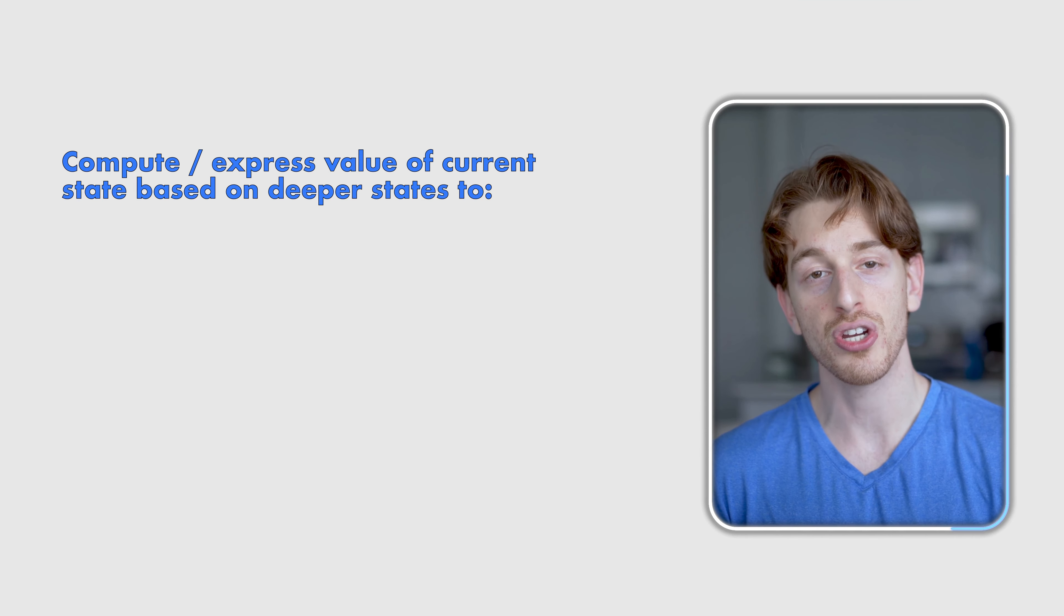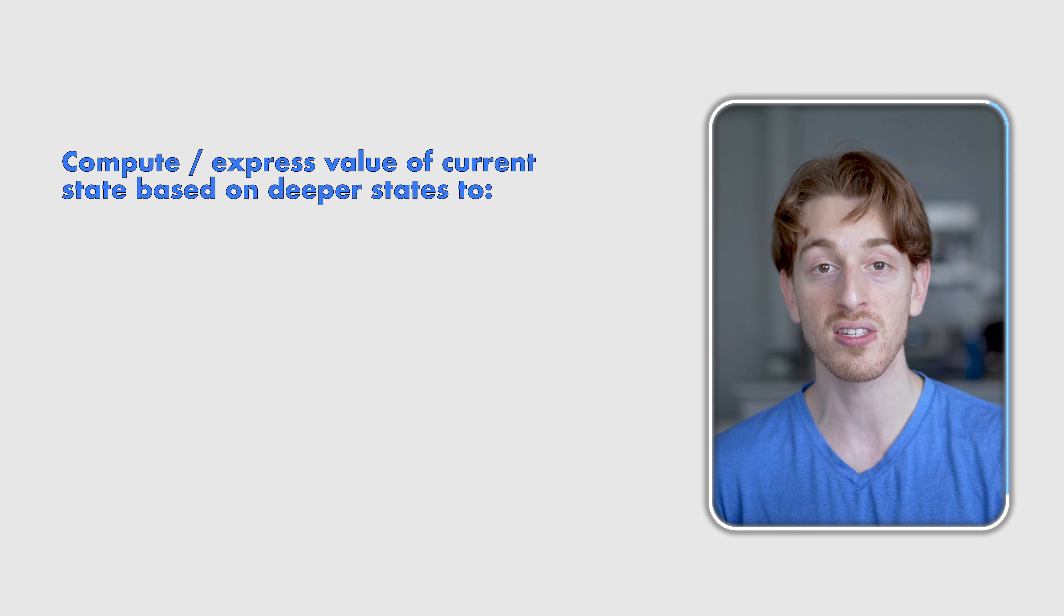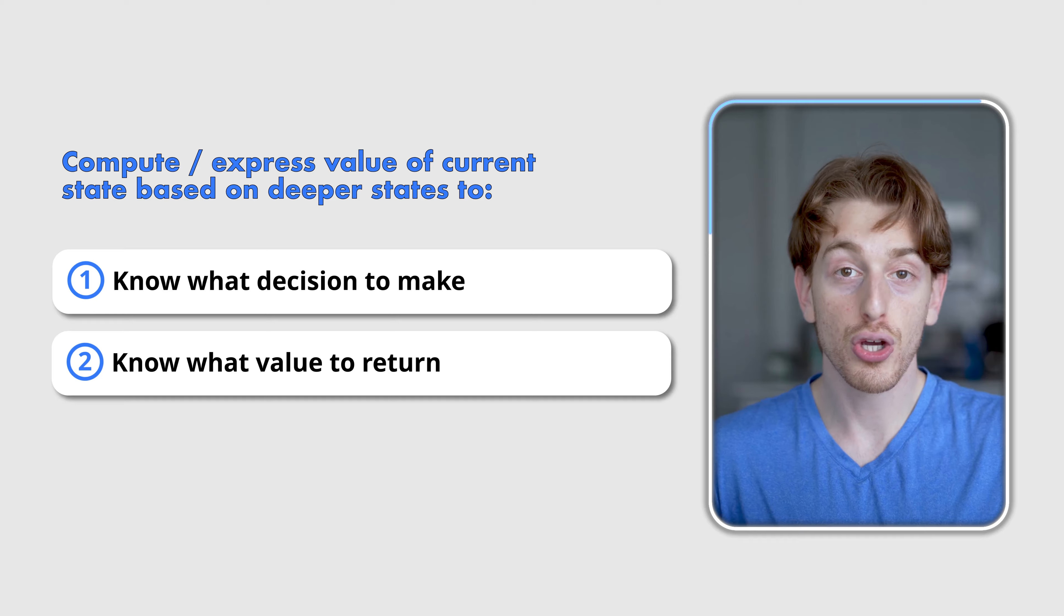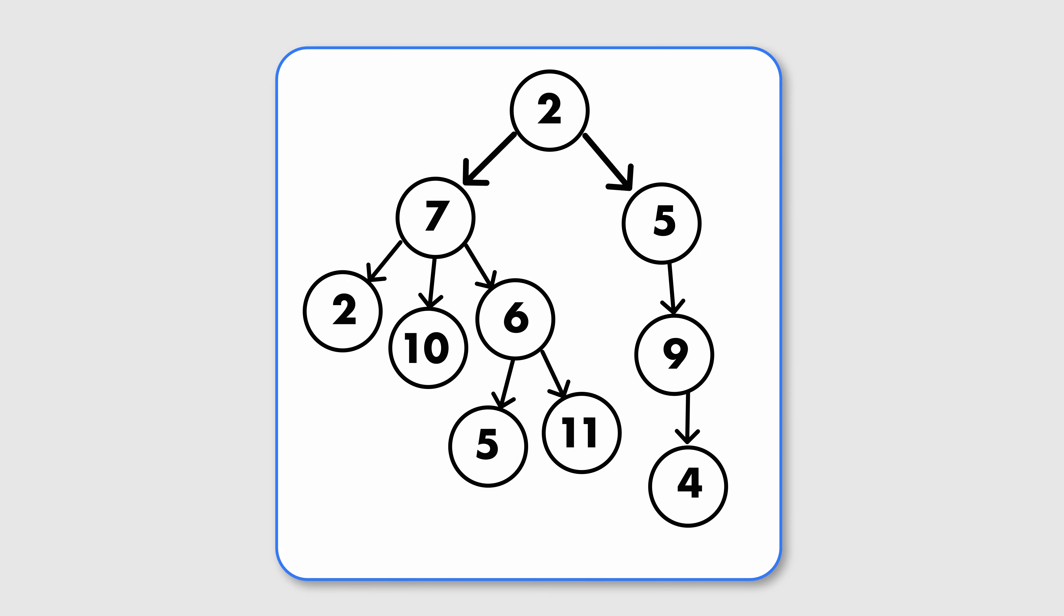The tricky part in the beginning is to understand in every recursion how the value of the current state is computed based on values of deeper states so we know what decision to make and what value to return. How do you go from that being tricky to your second nature? Not by thinking. Well, not only by thinking. You need to write down and sketch so you could visualize what exactly is going on because when we do recursion, all these states are basically nodes in a tree.